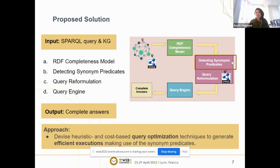The next component is query formulation, which rewrites the SPARQL query to one with a union of similar triple patterns. The important thing is that we need to use minimal synonyms to return the maximum answer. Finally, the rewritten query is executed against the SPARQL endpoint to return the complete answer.